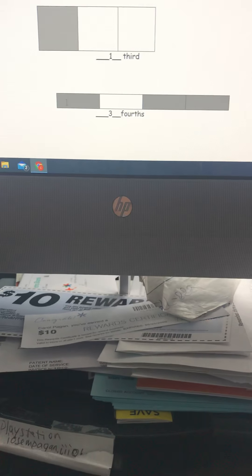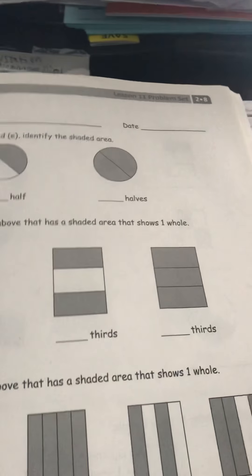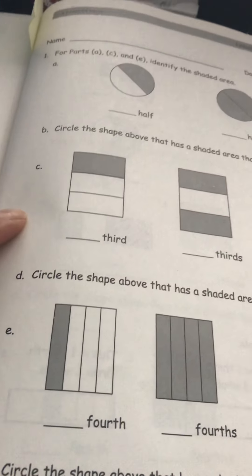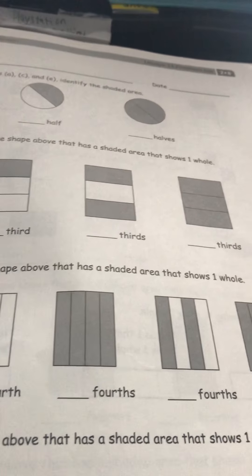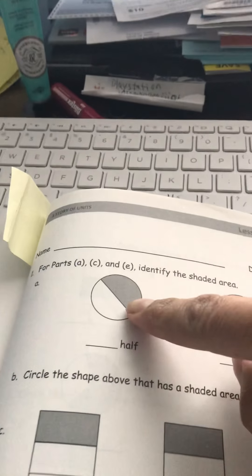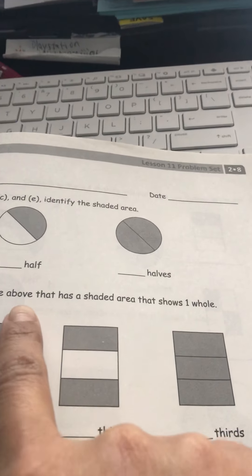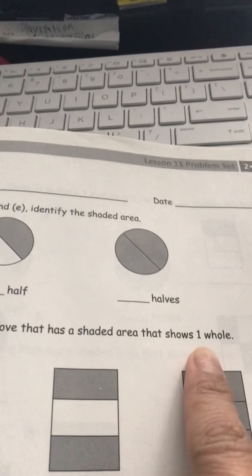If we look at our math book today, we're going to be working on pages 49 and 50. It says for parts A, B, and C, identify the shaded area — you want to identify how many pieces have been shaded in. So how many pieces are shaded in here? How many pieces are shaded in here? Remember, circle the shape above that has a shaded area that shows one whole.